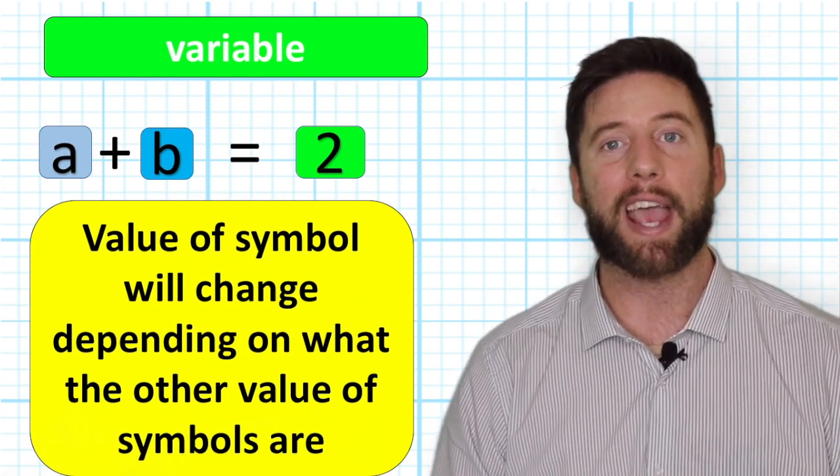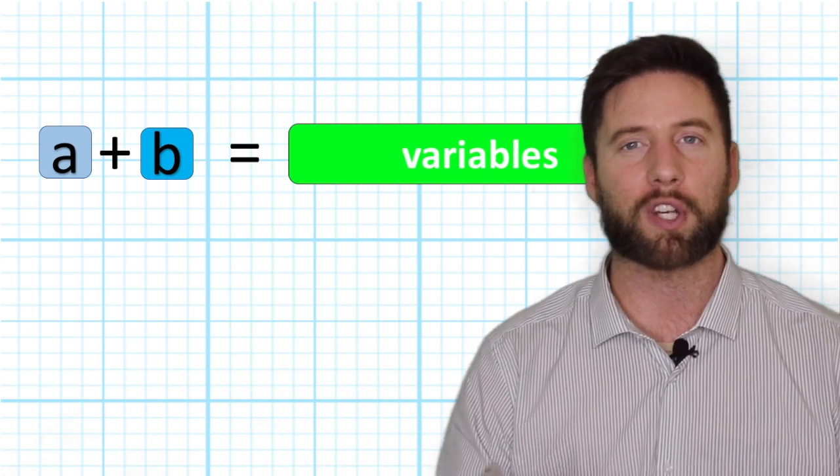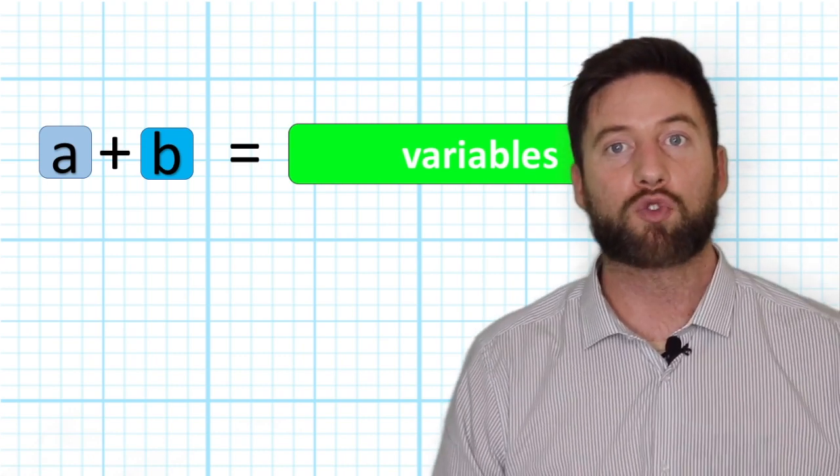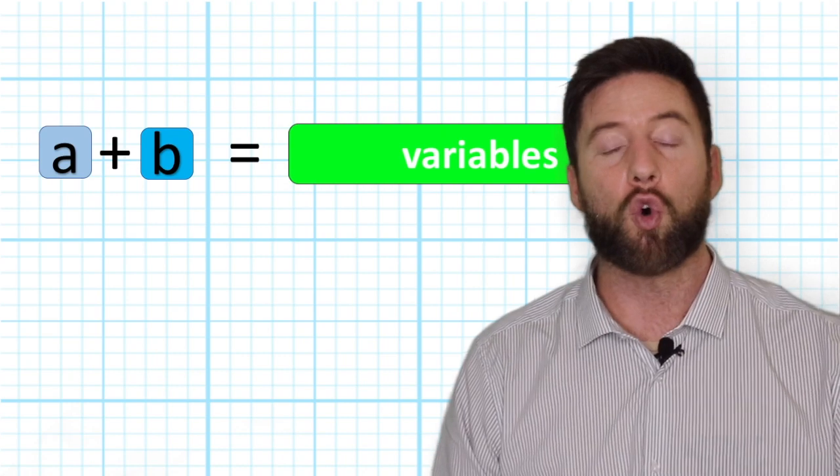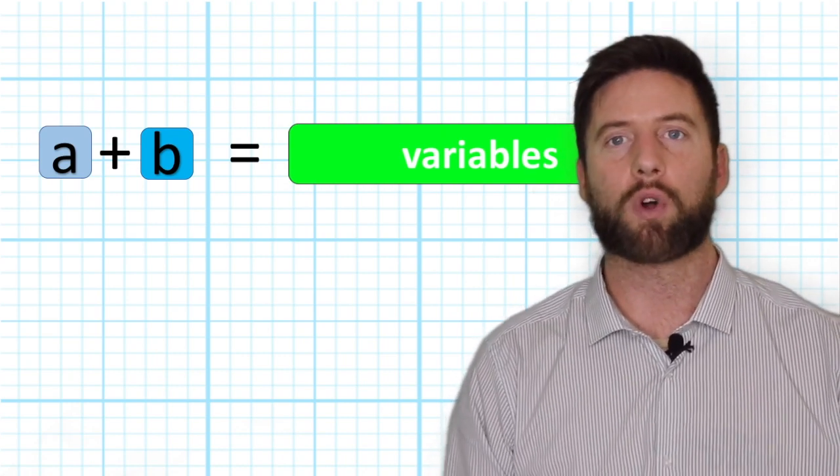Their value can change depending on what else is happening around them. In this example, both A and B are variables because their values can both change depending on what the other one is doing. So it's really common in algebra to refer to all letters and symbols as variables.